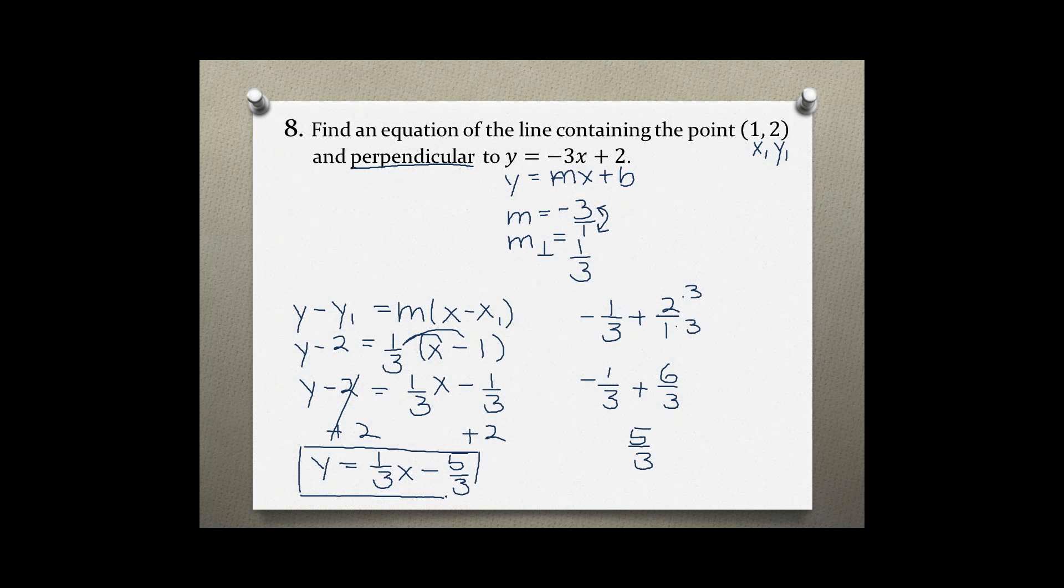y = 1/3x - 5/3, which contains the point (1, 2) and is perpendicular to the line y = -3x + 2.